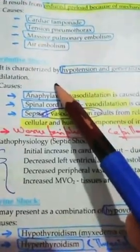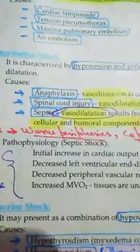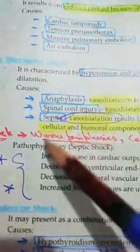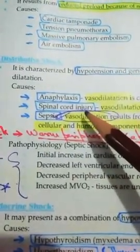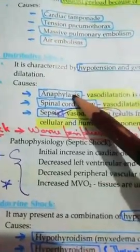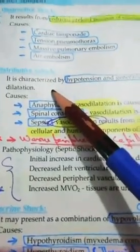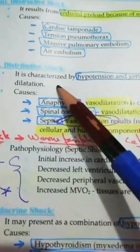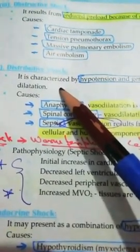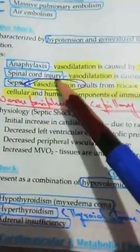The fourth type is distributive shock, characterized by hypotension and generalized tissue hypoxia. Unlike other shocks, distributive shock is distinguished by vasodilation. Subtypes include anaphylactic shock, spinal cord shock, and septic shock. In anaphylaxis, vasodilation is caused by histamine release. In spinal cord injury, vasodilation results from failure of sympathetic outflow. In sepsis, bacterial endotoxins are released into the bloodstream, or there is activation of cellular and humoral components of the immune system — giving three reasons for vasodilation.